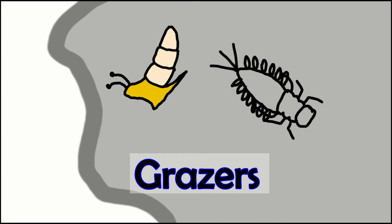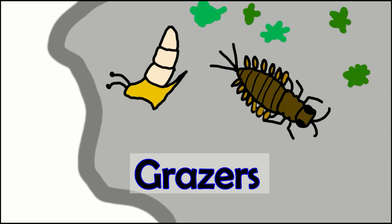Next are the grazers. These are the snails and the mayflies. Their job is to travel along the substrate and rocks to eat the layer of algae and microorganisms. They will also rip algae off of rocks and send it downstream.